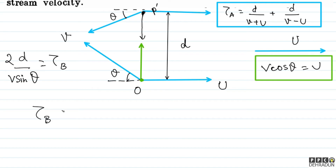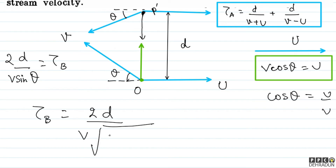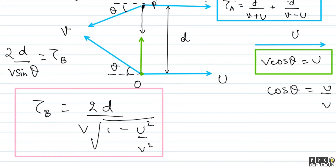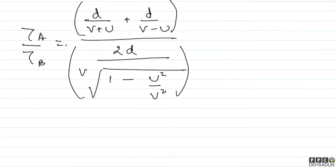So tau B can be written as 2D divided by V times sinθ, where cosθ = U/V, so sinθ = √(1 − U²/V²). Now we have both tau A and tau B. Tau A was D/(V+U) + D/(V−U), and tau B is 2D divided by V√(1 − U²/V²). Taking the ratio tau A upon tau B, we can cancel D everywhere. Then tau A becomes [1/(V+U) + 1/(V−U)], whose LCM gives numerator (V−U + V+U) = 2V over denominator (V²−U²).